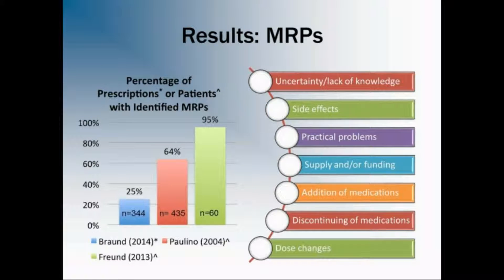First, we looked at studies that measured the effect of community pharmacists on medication-related problems. The graph on the left depicts that a range of 25% to 95% of patients or prescriptions had at least one medication-related problem identified by the community pharmacist.